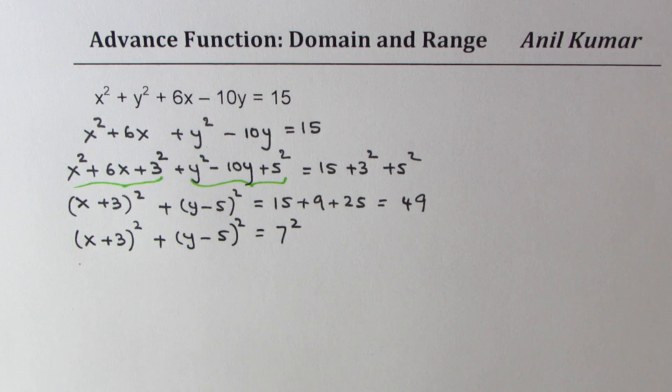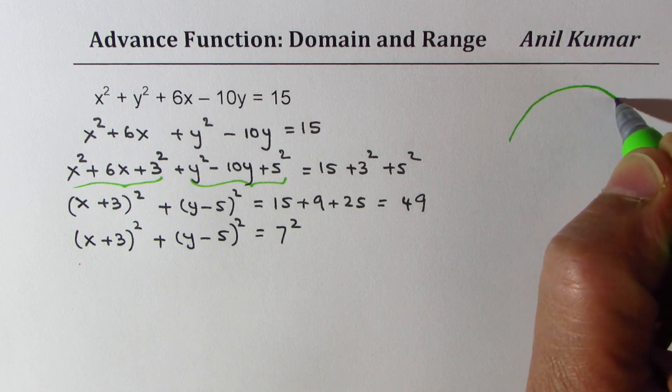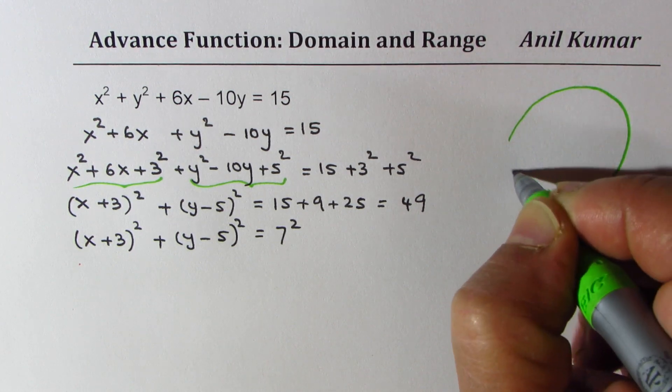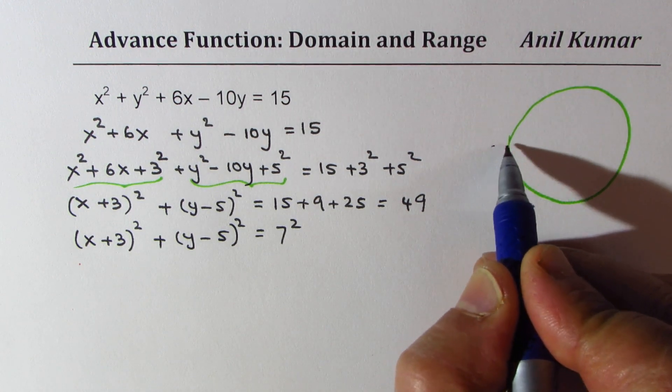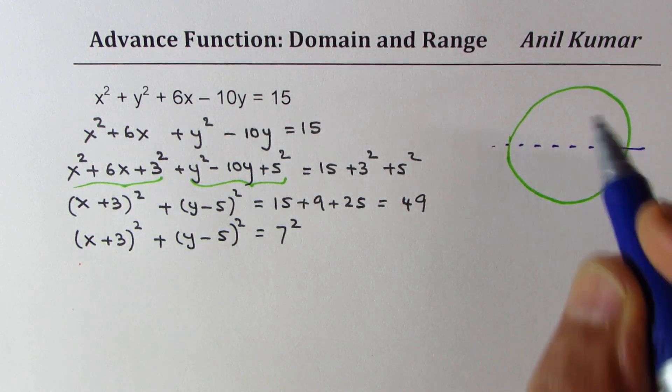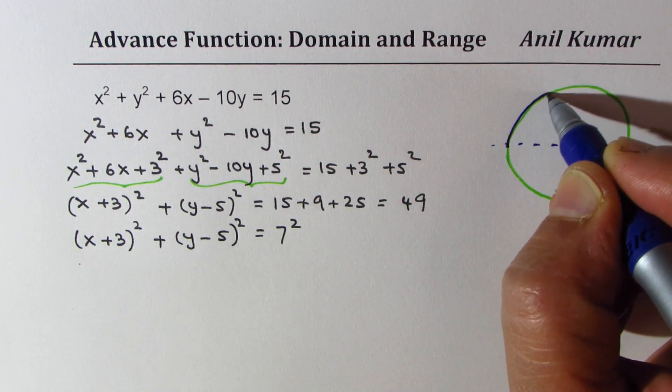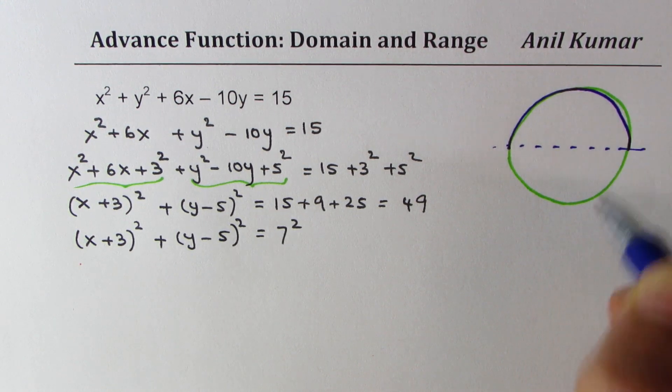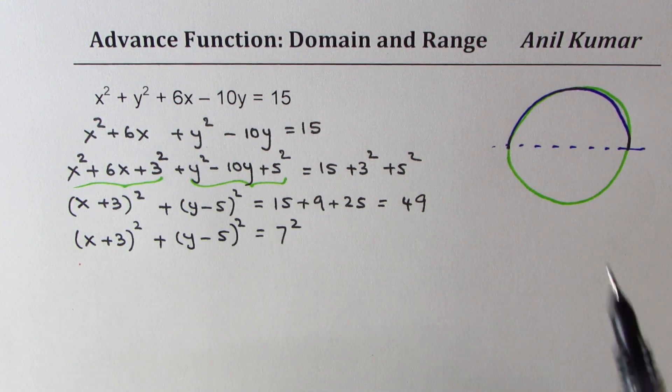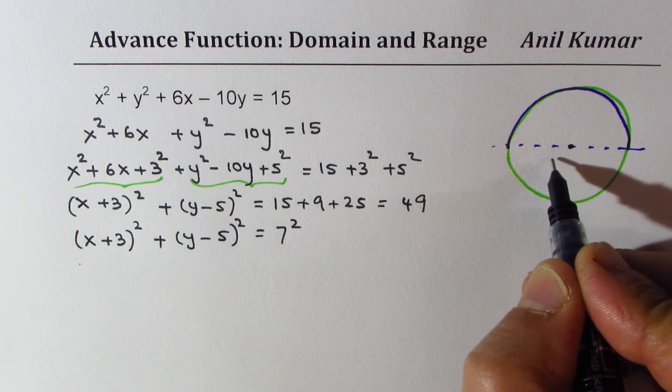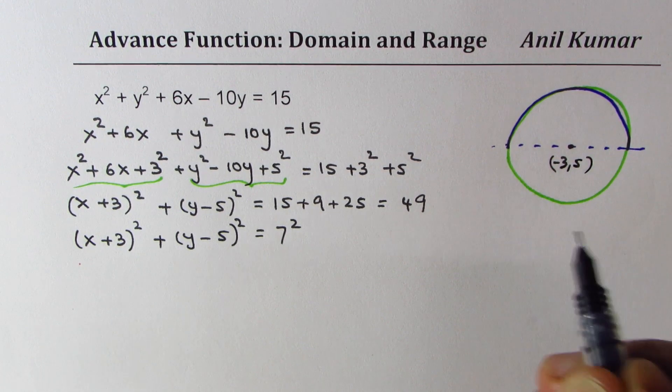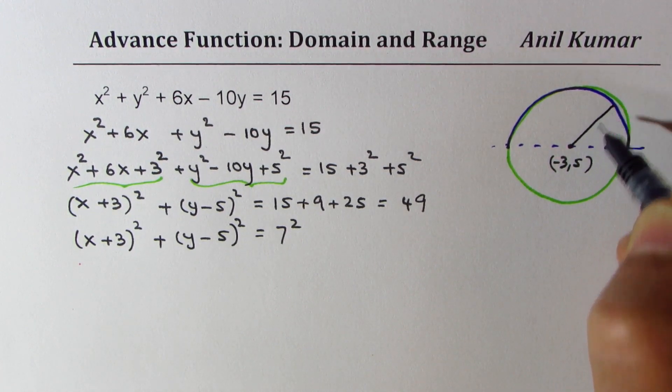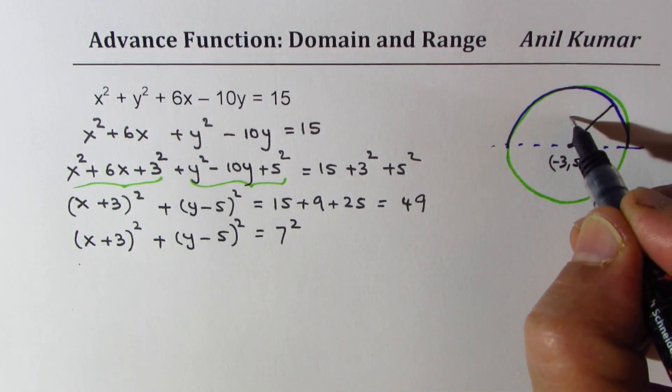So that gives you an idea. So we do have now our circle completely defined and we will split it into two parts, each semicircle will be a function. So that becomes our circle with the center at minus 3, 5 and the radius being 7.